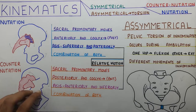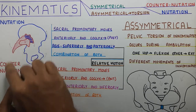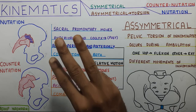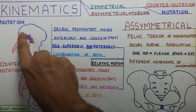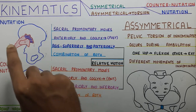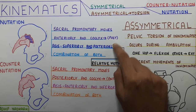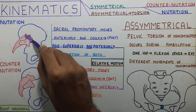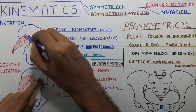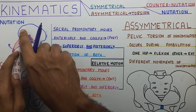Coming back to nutation: in nutation, the space between the innominate bone and the sacrum increases, whereas in counter-nutation this space reduces. The movement can be described in three ways: first, the movement of the sacrum; second, the movement of the innominate bone; and third, the movement of both bones together. Starting with sacrum movement — the sacral promontory moves anteriorly and the coccyx moves posteriorly. The sacral promontory is marked here in purple, and the coccyx is in the posterior region. So the sacral promontory goes anteriorly and the coccyx posteriorly — this makes up nutation.